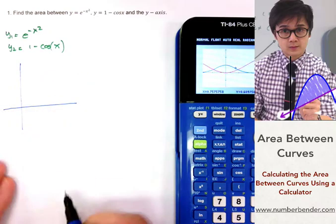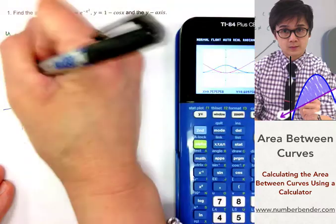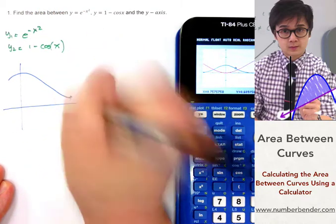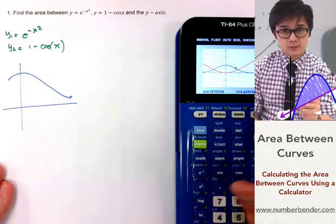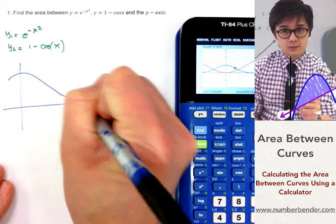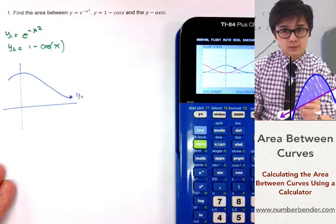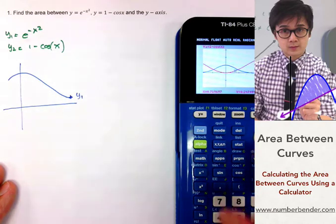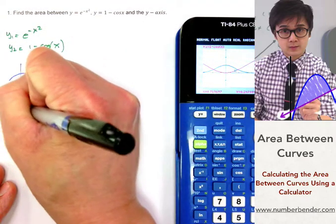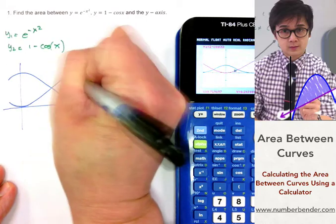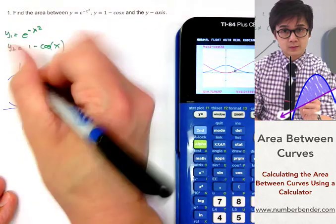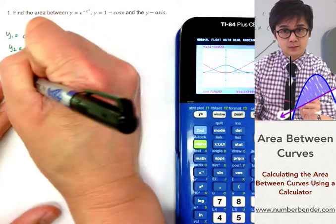So we have the blue graph, which is represented by y sub 1, and the red graph is y sub 2, which is 1-cos(x). Since we are finding the area between the function and the y-axis, this is the region that we are approximating.